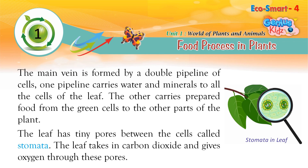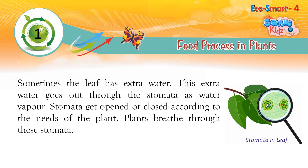The leaf has tiny pores between the cells called stomata. The leaf takes in carbon dioxide and gives out oxygen through these pores. Sometimes the leaf has extra water, and this extra water goes out through the stomata as water vapor. Stomata get opened or closed according to the needs of the plant. Plants breathe through the stomata.